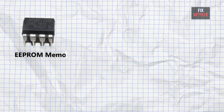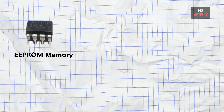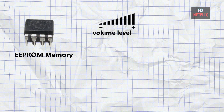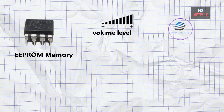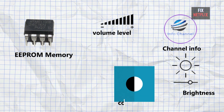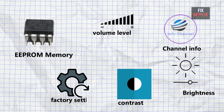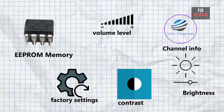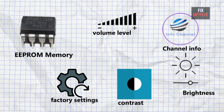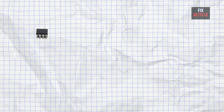Let's start with the EEPROM. This chip stores your personal settings like volume level, channel info, brightness, and contrast. It also keeps factory settings — for example, the color calibration used during quality control.